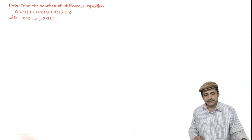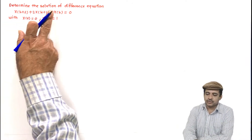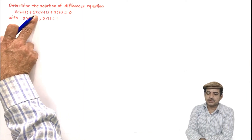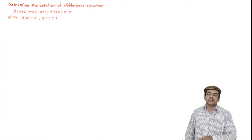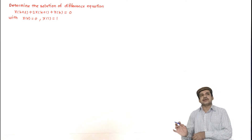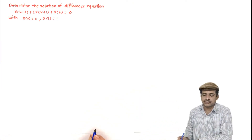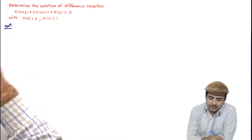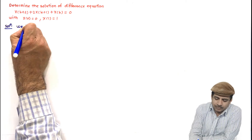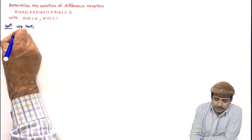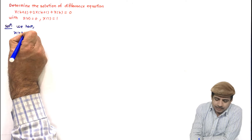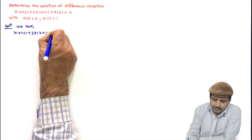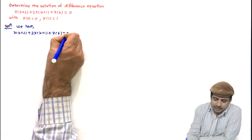Let us consider an example: determine the solution of the difference equation x(k+2) + 2x(k+1) + x(k) = 0, with initial conditions x(0) = 0 and x(1) = 1. Let us start the solution. We have x(k+2) + 2x(k+1) + x(k) = 0.